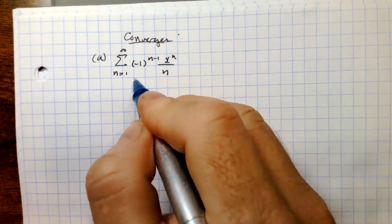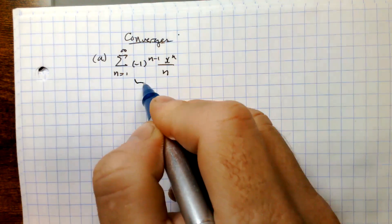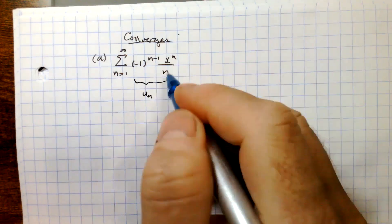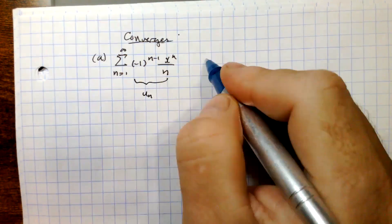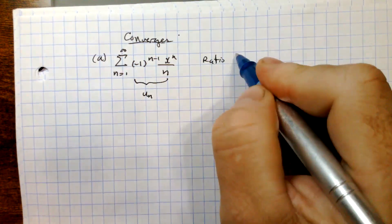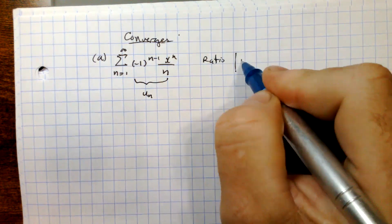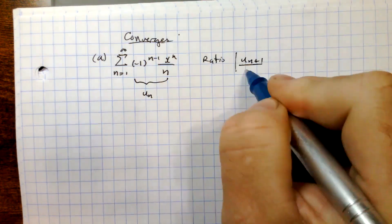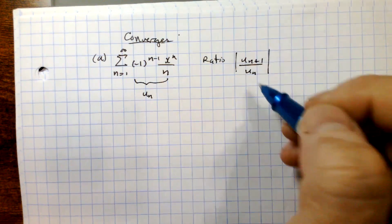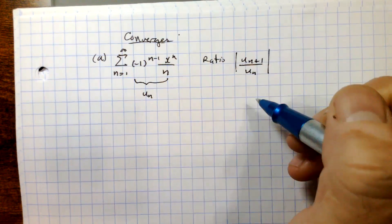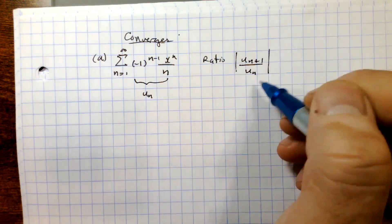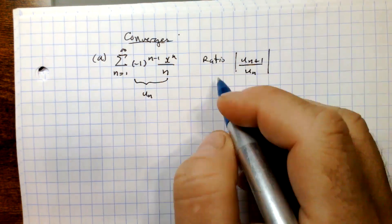We'll consider this our u_n term, and we're going to make a ratio. We're going to look at the absolute value of u_(n+1) divided by u_n, and see for which values this shows us where the series converges.